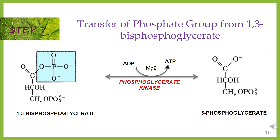Step 7: transfer of phosphate group from 1,3-bisphosphoglycerate. Phosphate is transferred from 1,3-bisphosphoglycerate to ADP to form ATP, with the support of phosphoglycerokinase. Thus, two molecules of 3-phosphoglycerate and ATP are gained at the end of this reaction.